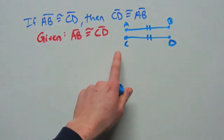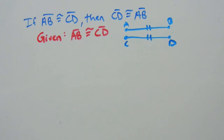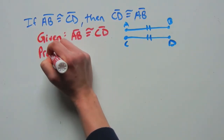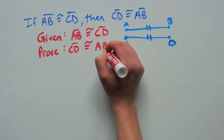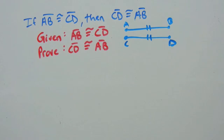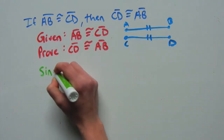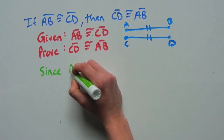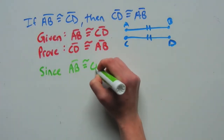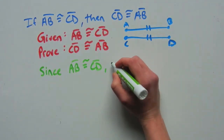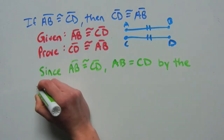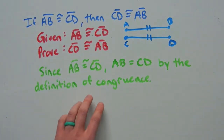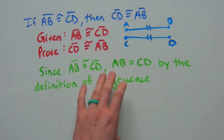We have that AB is congruent to CD, and what we're trying to prove is that CD is congruent to segment AB. I'm going to do this in paragraph form, so we're just going to develop the steps by writing them out in words. Since we have that AB is congruent to CD, then AB is equal to CD, and that's by the definition of congruence. The definition of congruence says that congruent segments have equal measures, so AB is equal to CD.